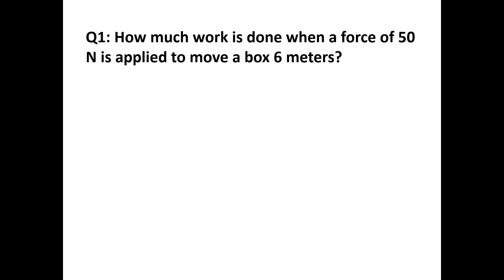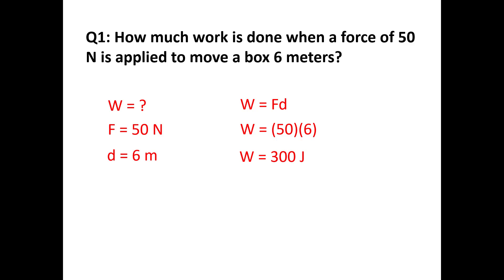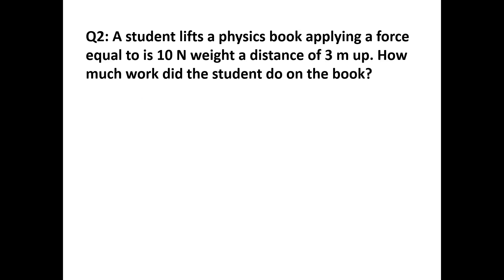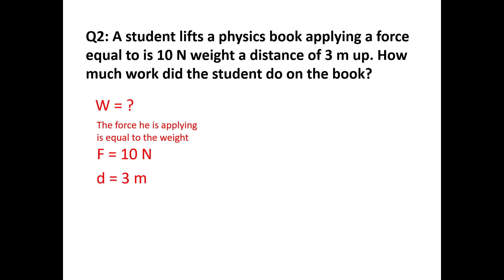Example 1: How much work is done when a force of 50 newtons is applied to a box over 6 meters? We have F = 50 N and D = 6 m. W = 50 × 6 = 300 joules. Example 2: A student lifts a physics book applying a force equal to its 10-newton weight a distance of 3 meters up. W = 10 × 3 = 30 joules.